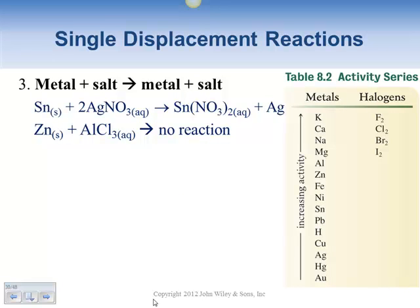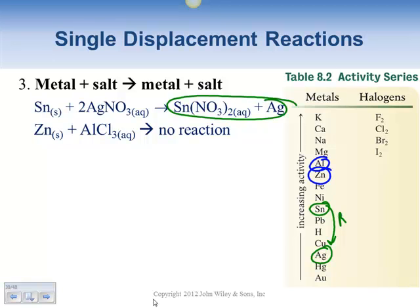Here are a couple more examples. We have tin and silver — since tin is above silver on the activity series, you'll have a reaction. When we compare zinc to aluminum, zinc is below aluminum, so there is no reaction. If you start at zinc and go up to aluminum, no reaction; start at tin and go down to silver, then a reaction.